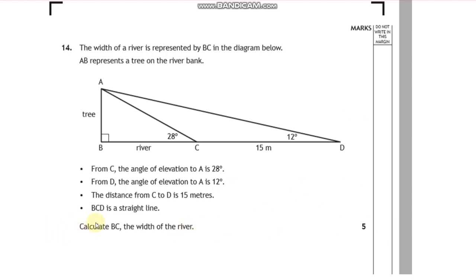So we've been asked to calculate the width BC of the river, so I'm going to call that X, that's what I'm trying to find. I'm just going to double check that everything in the question that's written down is actually in here. So the 28 is shown, the 12 is shown, the 15 is shown, and BCD is a straight line. So it's like ground level with the river marked initial.